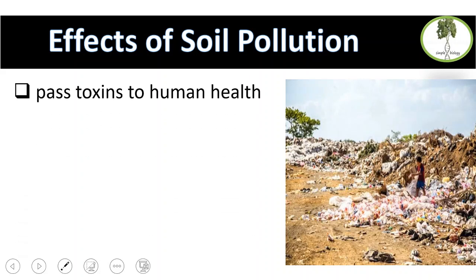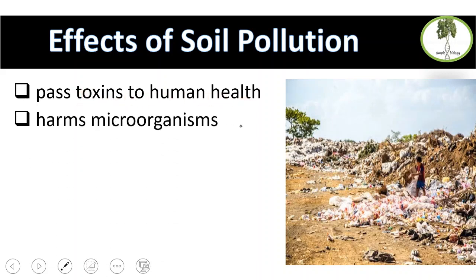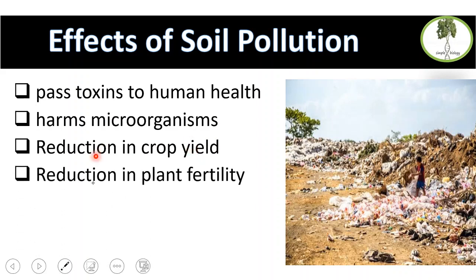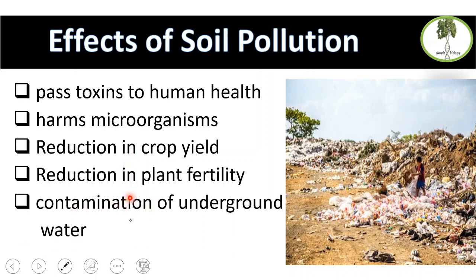What are the effects of soil pollution? Toxins in the soil are absorbed by plants and passed to humans. It harms microorganisms living in the soil, potentially killing them. It reduces crop yield if the soil is not rich in nutrients, and reduces plant fertility. Pollutants that leach into underground water contaminate it. Acid rain changes and decreases the soil pH.